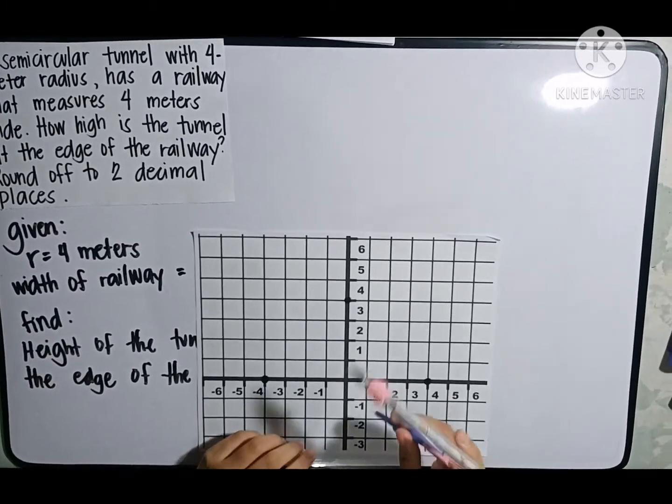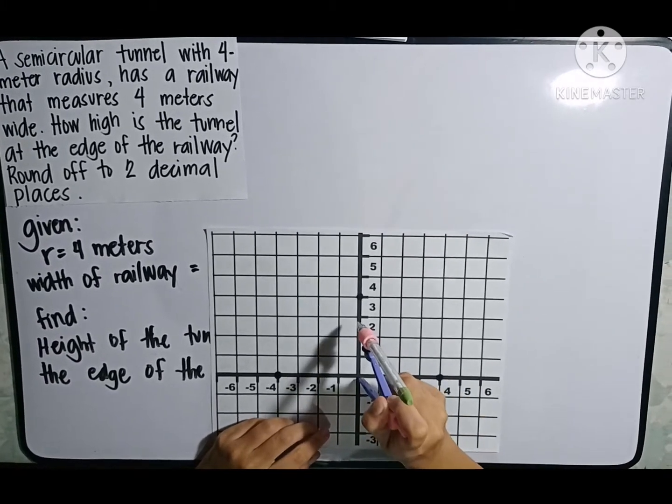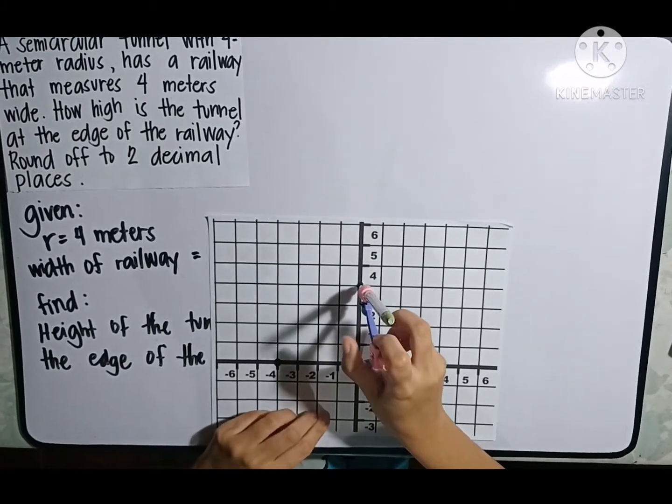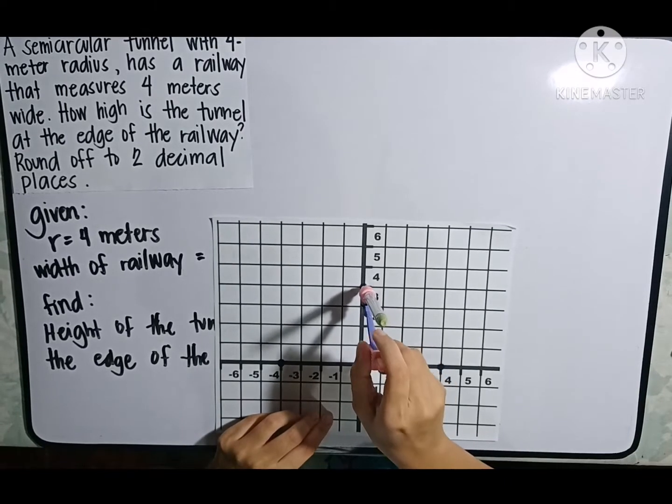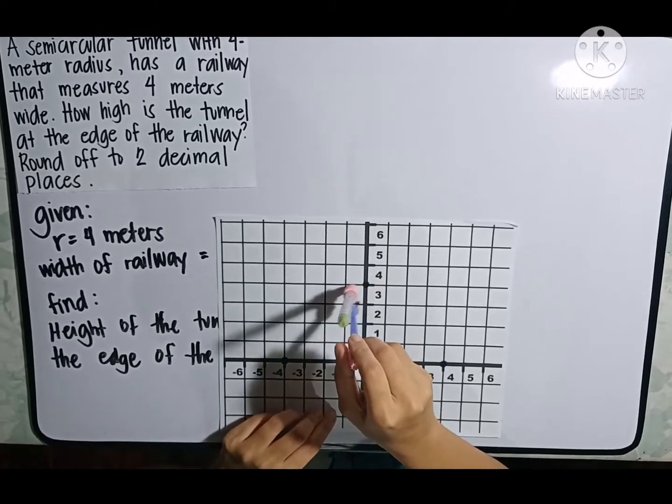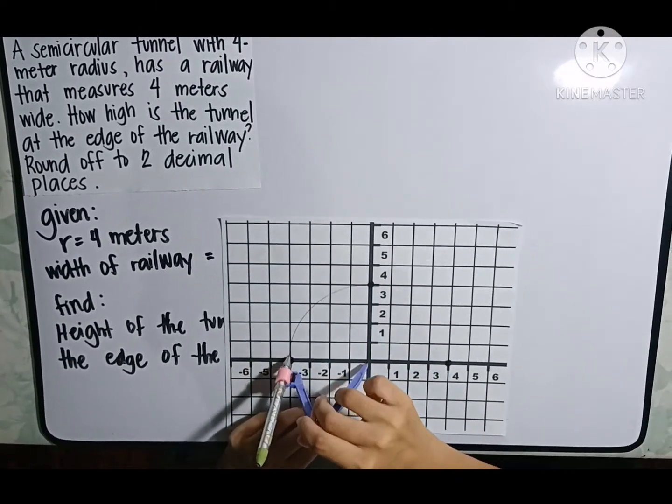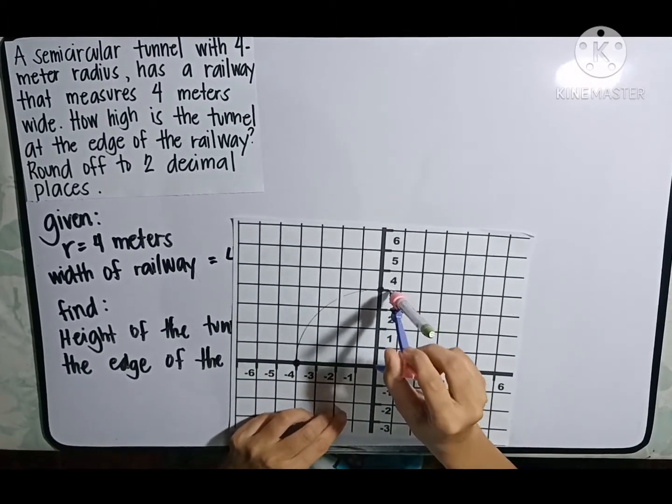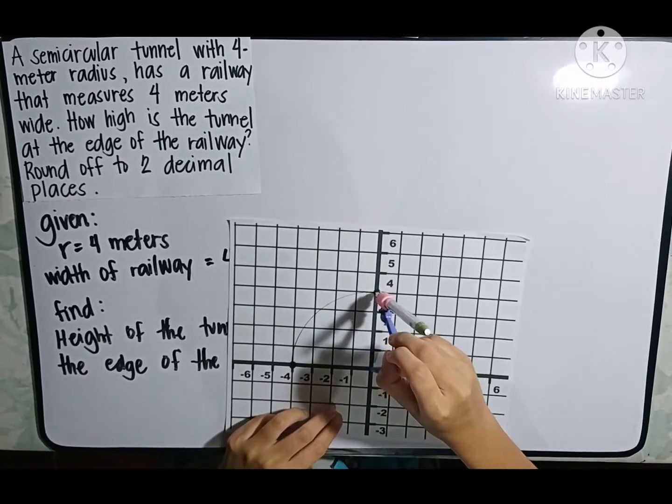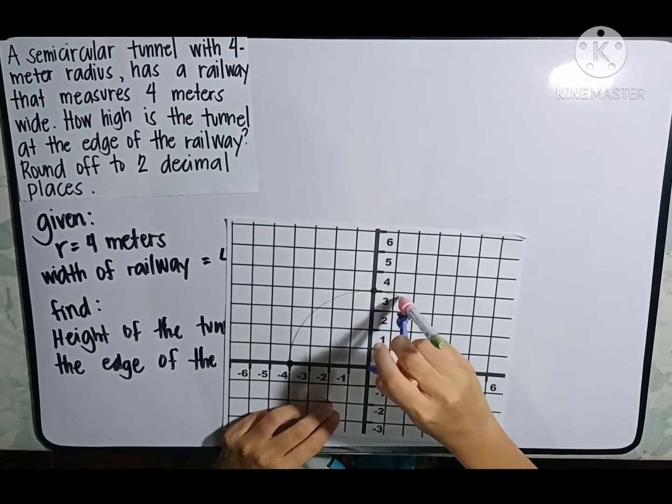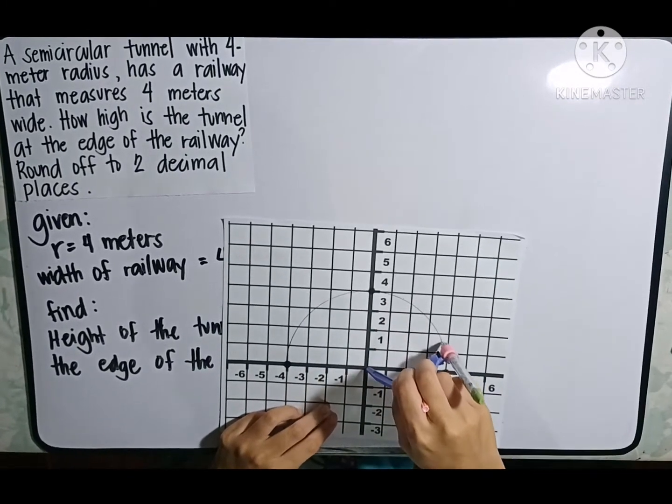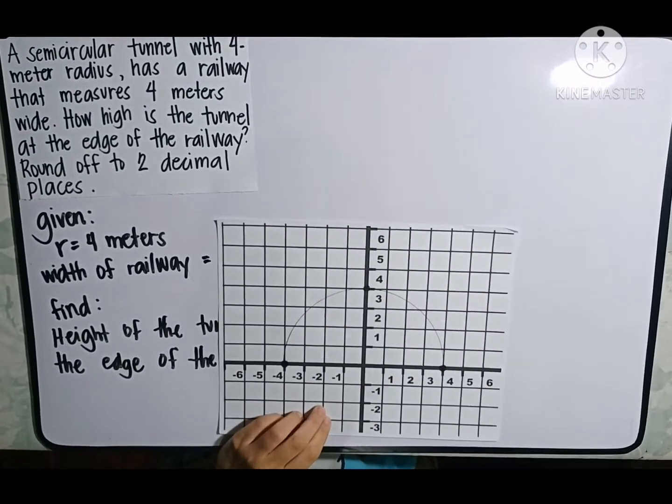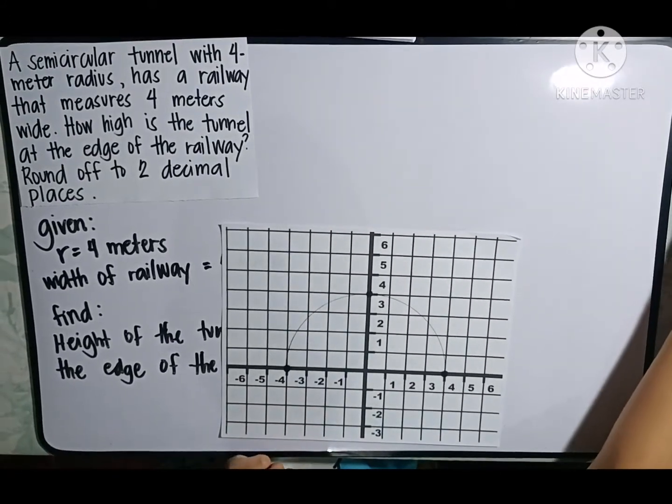I'll be using this compass. Then, let us graph our semicircle. Now, let us go from the other side. And that's it. This is our semicircular tunnel.